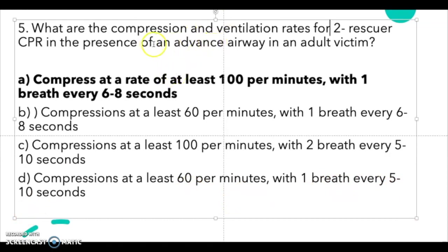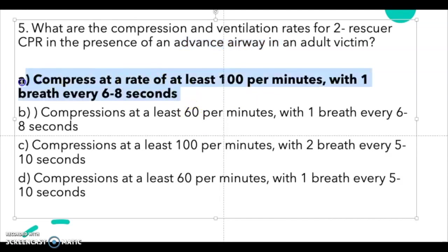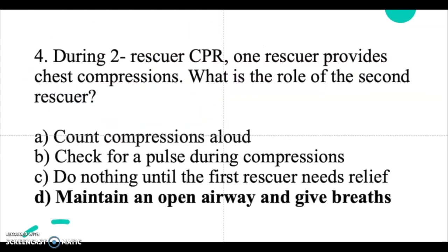The correct answer is A. The key word here is 'with an advanced airway in place' — you compress at a rate of at least 100 per minute with one breath every 6–8 seconds. That's the recommendation from the American Heart Association when you have an advanced airway in place.